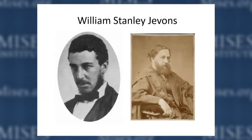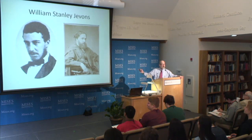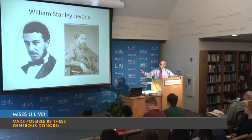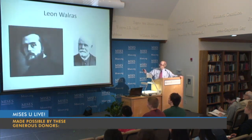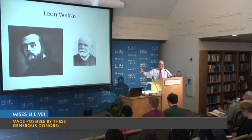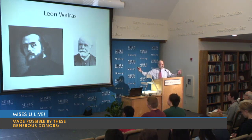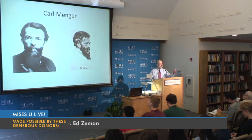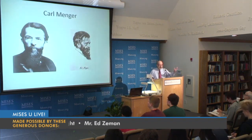Here are some pictures. This is the young William Stanley Jevons — kind of looks like a mob enforcer. As he got older he looks more like the cranky guy who lives next door and yells at the kids to get off his lawn. Léon Walras looks kind of diabolical and scary when he was younger, and turns out to be your grandfather. And here's Carl Menger — dignified when he was younger, dignified when he was older.